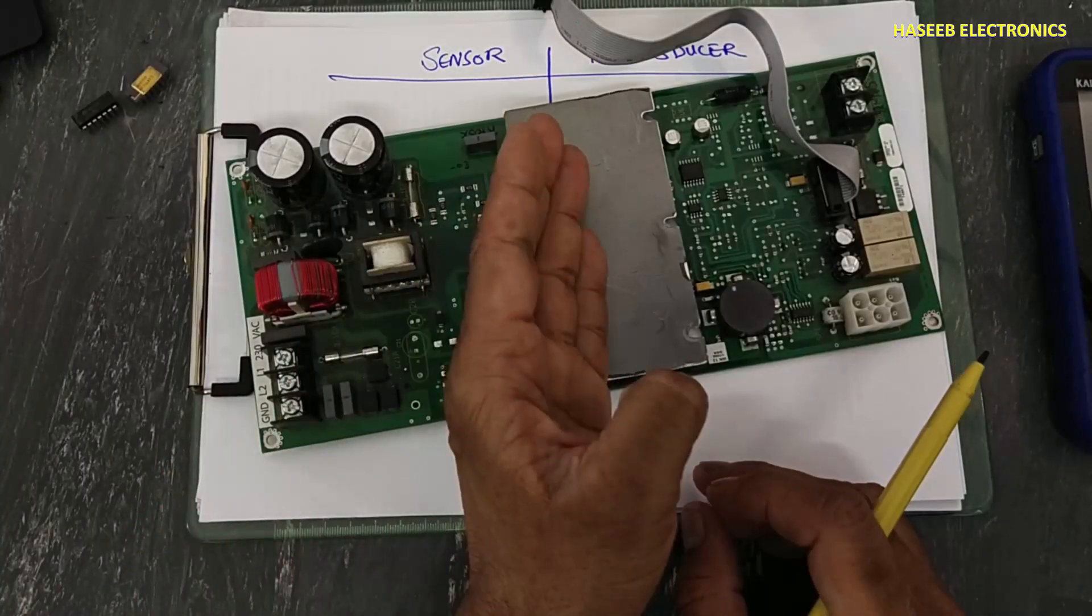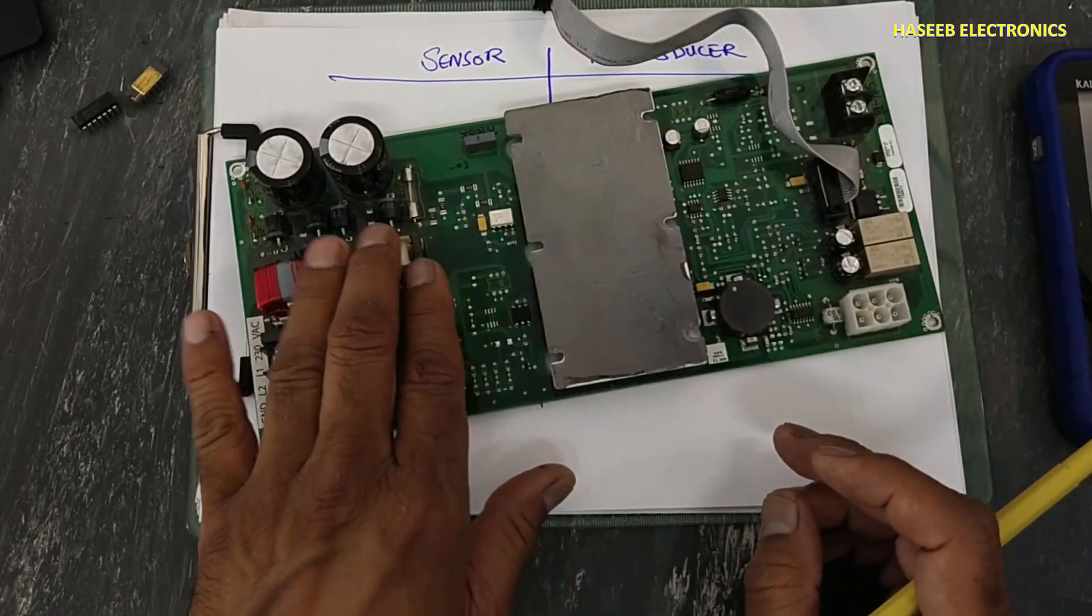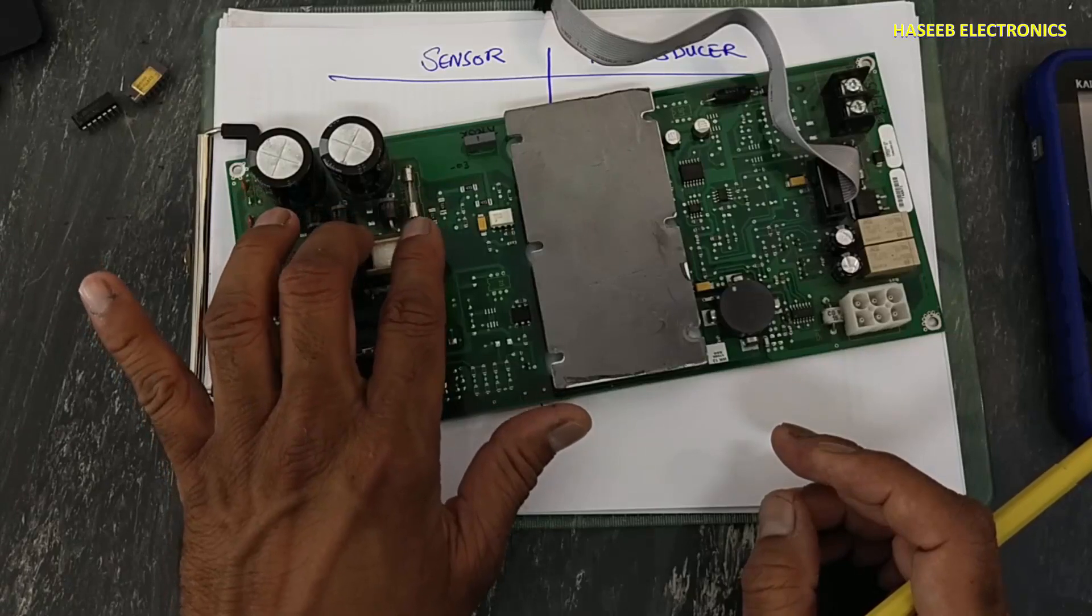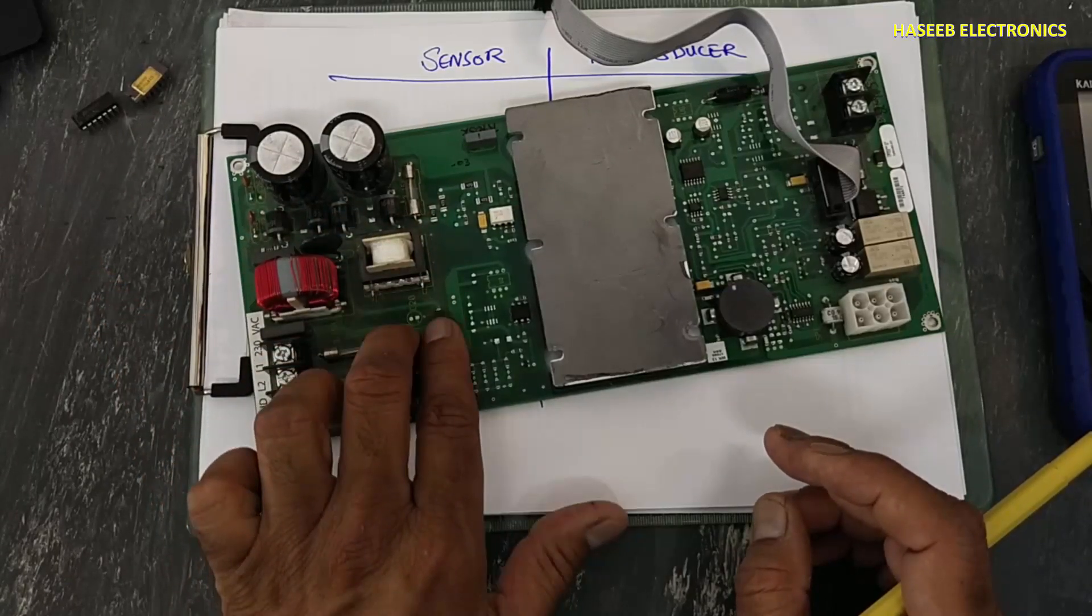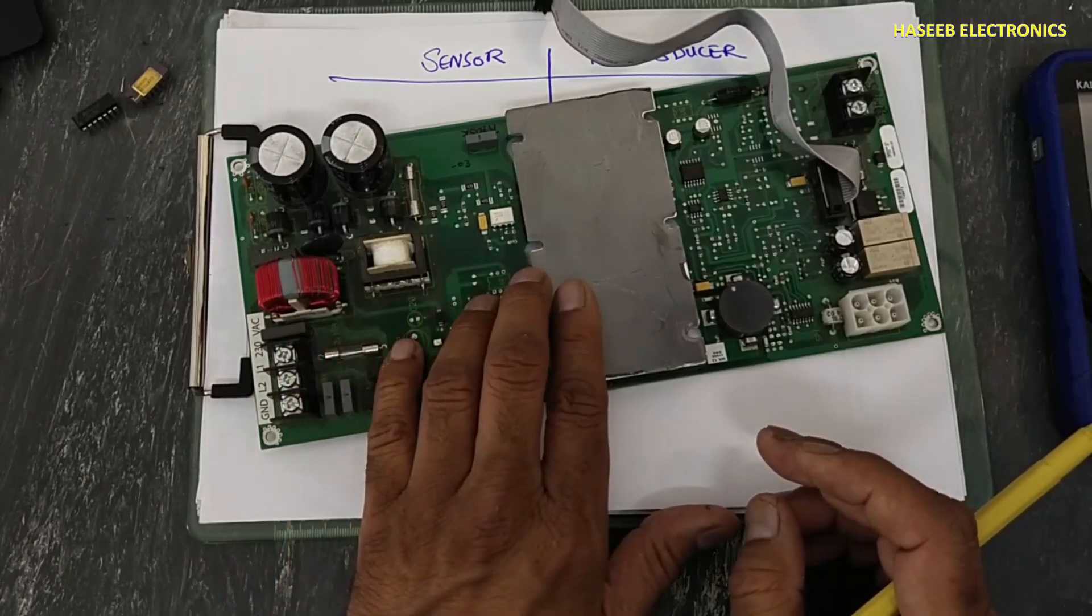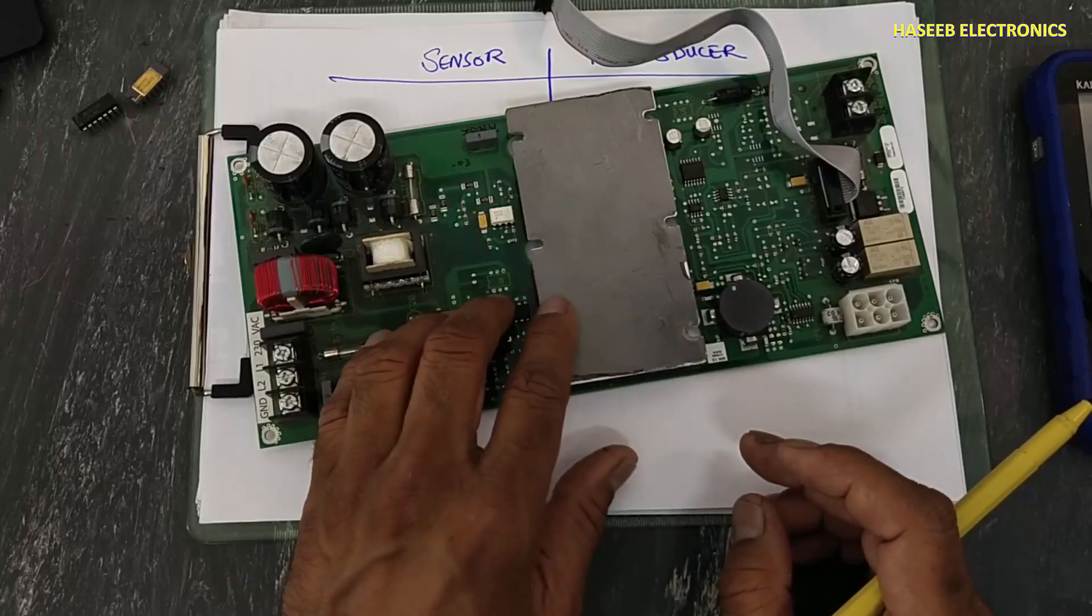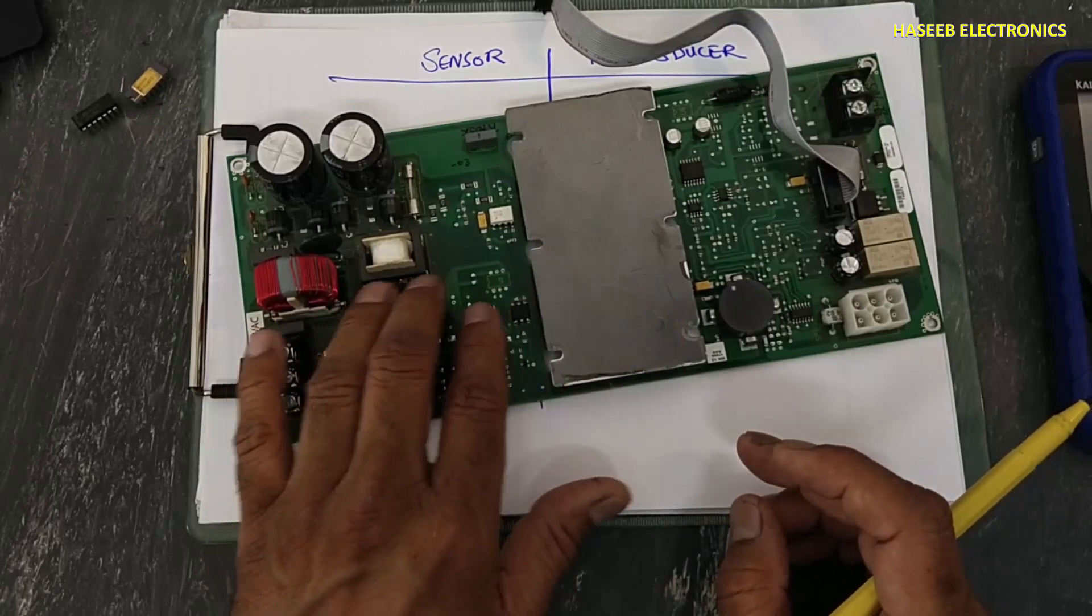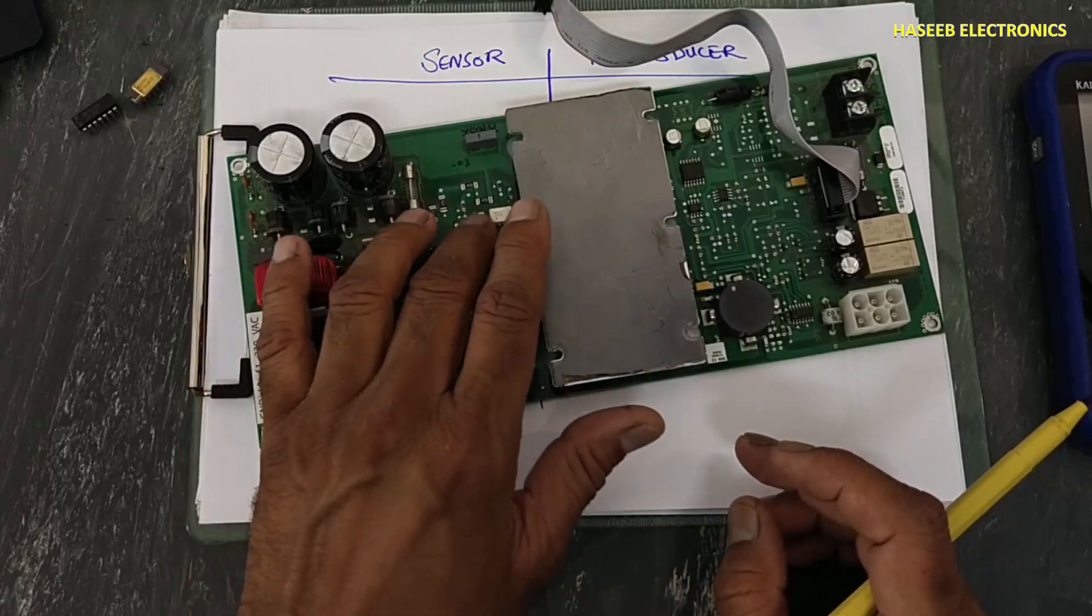Similarly, if you are using current transformer, the system will draw current and this transformer will translate that electrical current into voltage and we will receive that voltage. Then we need to process that voltage, we need to rectify, then this voltage will go into processor. Microcontroller will use that voltage and microcontroller will come to know how much current is flowing in the circuit.